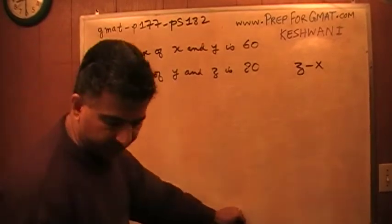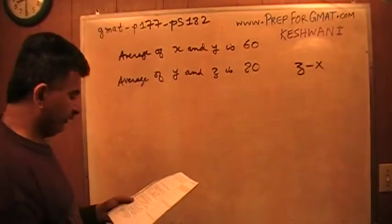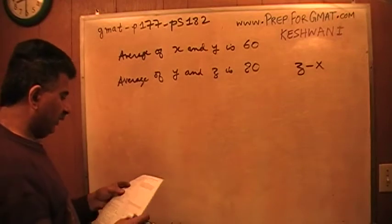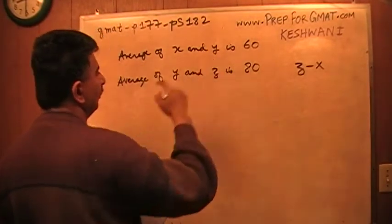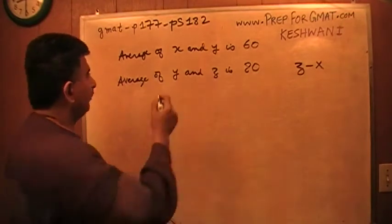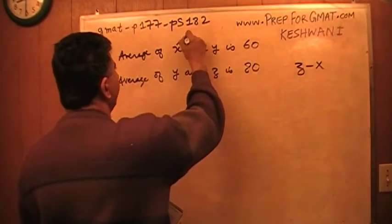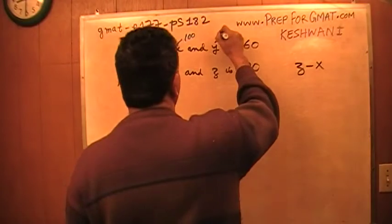But just to satisfy your curiosity, I'm going to do it the classical way in a second. Let's first do the plugging in way. So I have two numbers, X and Y, and I know that their average is 60. So I'm going to make up two numbers where average comes out to be 60. Since their average is 60, they have to add up to 120. So I'm just going to make up something. Let's pretend that X is 100, and the Y is 20.